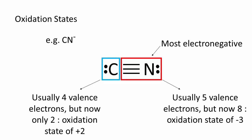A free nitrogen atom normally has five valence electrons, and now it has eight, so its oxidation state is negative three. The sum of the two is the charge on the molecule, negative one.